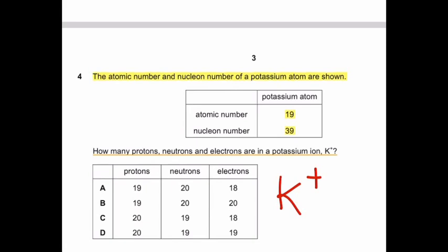So now potassium ion has 19 protons as shown by atomic number, 20 neutrons as shown by 39 minus 19, and electrons are 18 because it has lost one electron. So A is the correct answer.